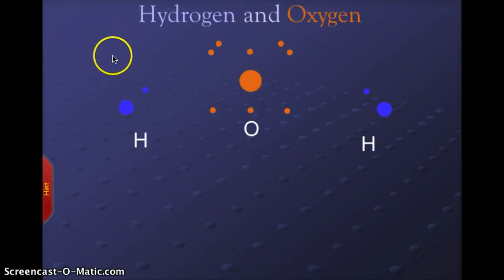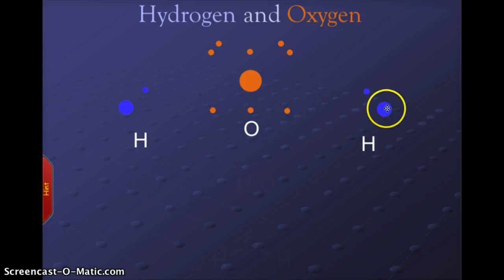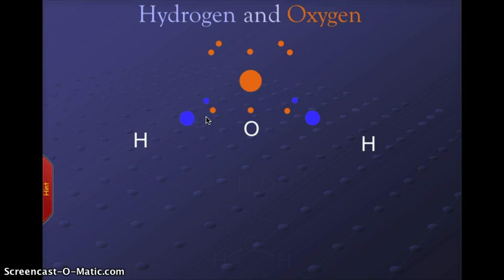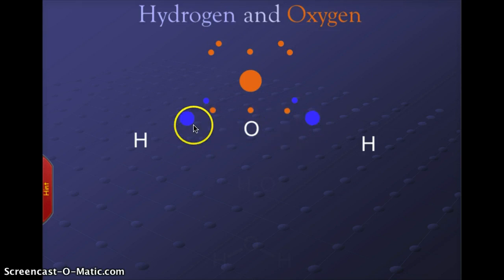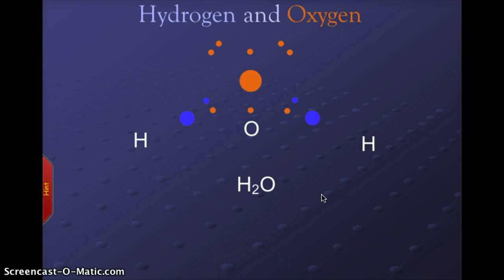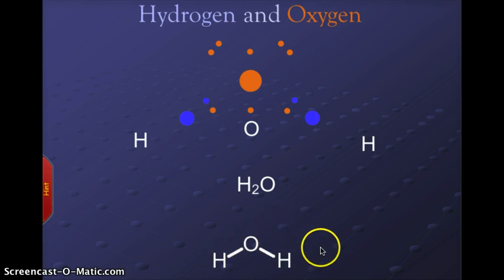Water is probably the most abundant and readily available covalent molecule. Oxygen again has six valence electrons and is looking to share in two spaces on its outer orbit. Hydrogen fills the bill once again — each hydrogen fills one of those empty spaces, so oxygen now has eight electrons in its outer orbit and each hydrogen follows the rule of duet, giving us the H₂O molecule. The molecule is an oxygen with a single bond to each hydrogen.